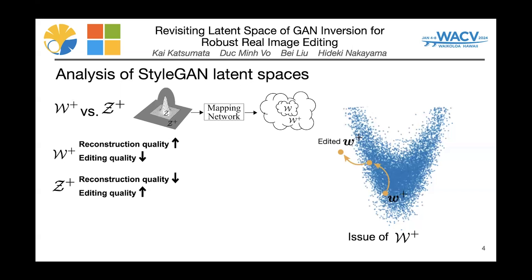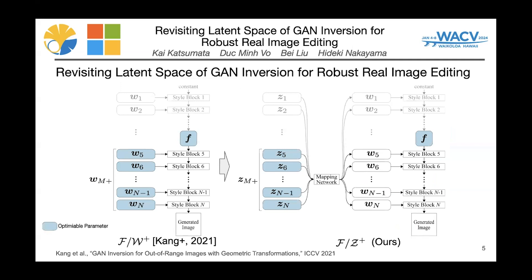To improve GAN inversion, we consider how to achieve high reconstruction quality while using Z+ for high editing quality. We replace the latent space of strong GAN inversion methods with G+ space. For example, FW+ space optimizes the latent code W and an intermediate feature map F. This method yields outstanding reconstruction performance. We can make FG+ space by replacing FW+ of the method with G+.